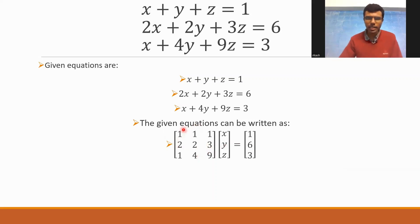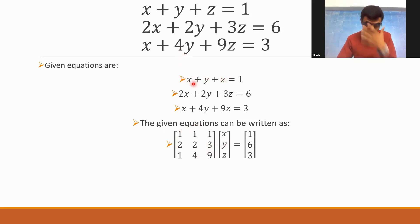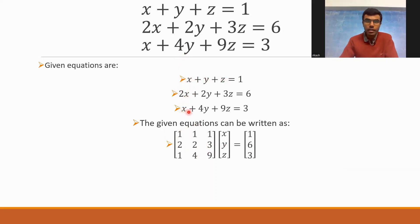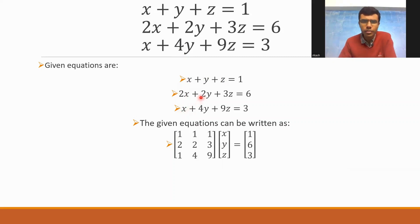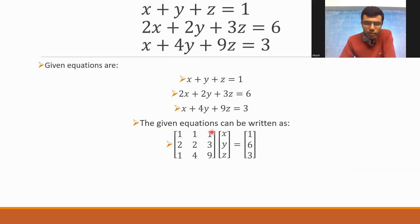It's very simple. I'm just putting the coefficients of X, Y, Z from the first equation, second equation, third equation. That's it — nothing new here. So beside X there is one, beside Y there is one, beside Z there is one. So I wrote 1, 1, 1.